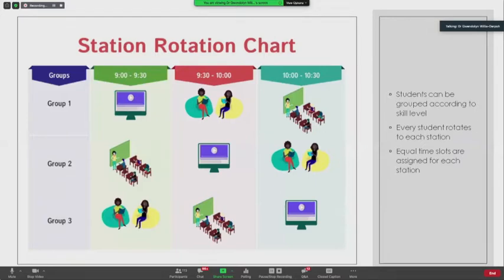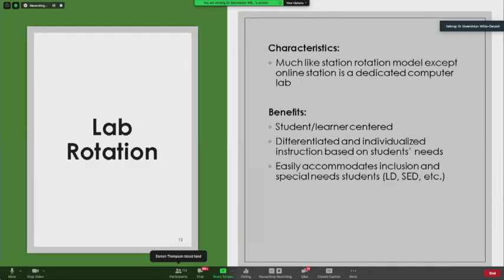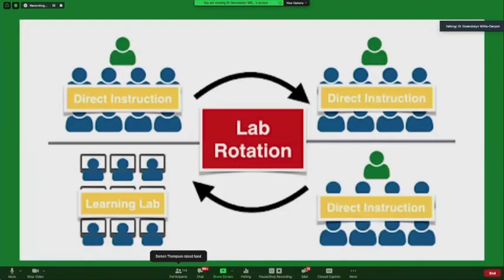The next one is lab rotation and it's very popular as well. It's like station rotation except one station is dedicated to online in a computer lab. Again, it's student centered. You can differentiate instruction and it easily accommodates special needs students. This diagram illustrates the configuration of a lab rotation. Students participate in direct instruction that culminates in computer lab activities that reinforce classroom content.